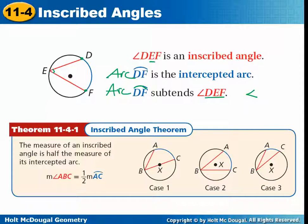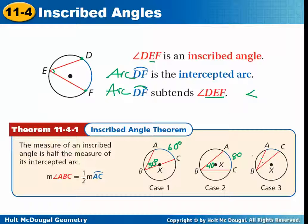There's a theorem for the inscribed angle. The measure of an inscribed angle is half the measure of its intercepted arc. So if the arc is 30, the angle is half of that — not equal, like central angles and their arcs are. Inscribed angles will always be half. If the arc is 80, the angle is 40. The arc measures are also in degrees, and you can get fractions, like 25 divided by 2 is 12.5.